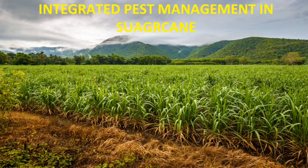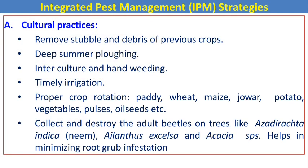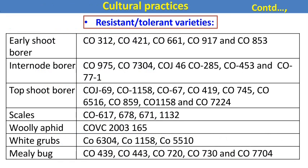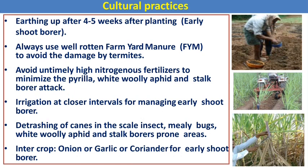The first practice of IPM is cultural practice, which is one of the primitive measures. With cultural practices we use different regular farm operations like field sanitation, summer deep plowing, intercultural operations, timely irrigation, and crop rotation to avoid or reduce the infestation of different insect pest populations. We can also use resistant or tolerant varieties that are developed against different insect pests in sugarcane. Early earthing up is a main practice followed in sugarcane to reduce infestation of the early shoot borer. Always use well-rotted farmyard manure to avoid damage by termites and white grubs.